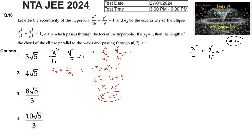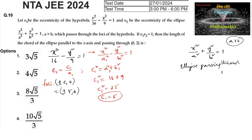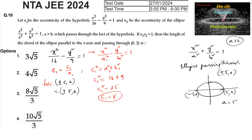The foci of the hyperbola are at (±c1, 0) = (±5, 0). Since the ellipse passes through these foci, the ellipse passes through the points (±5, 0). Since a > b, the points ±5 on the x-axis are the vertices of the ellipse, so a = 5.